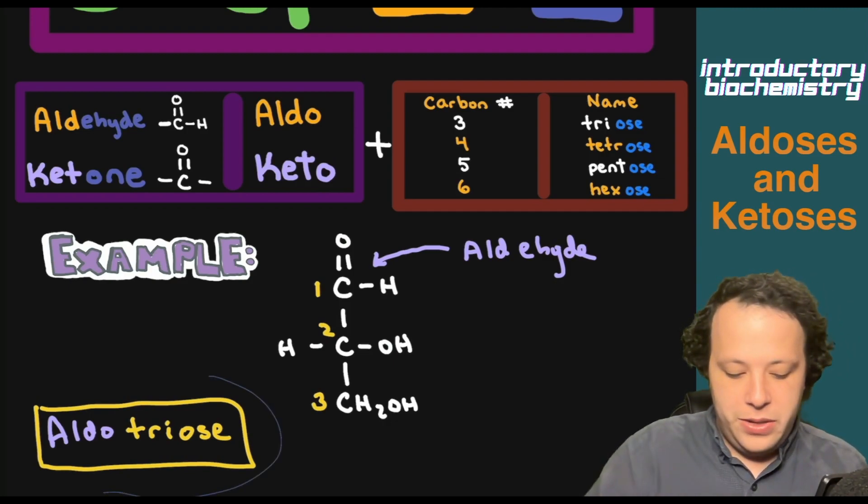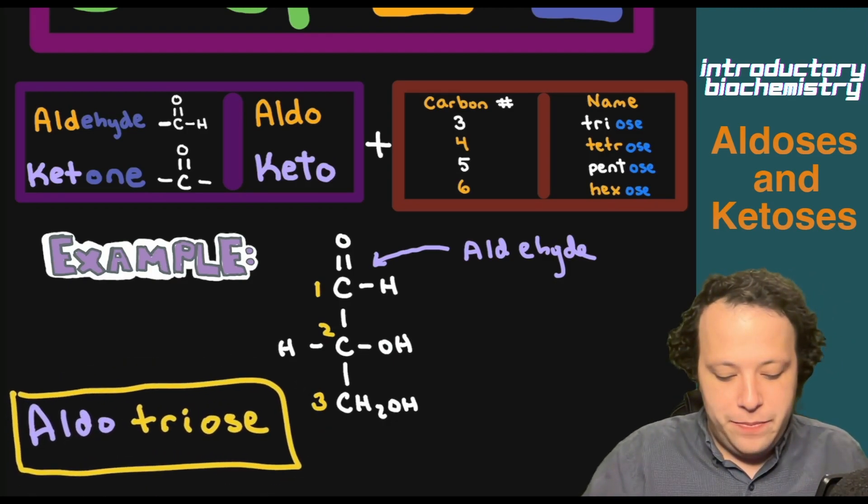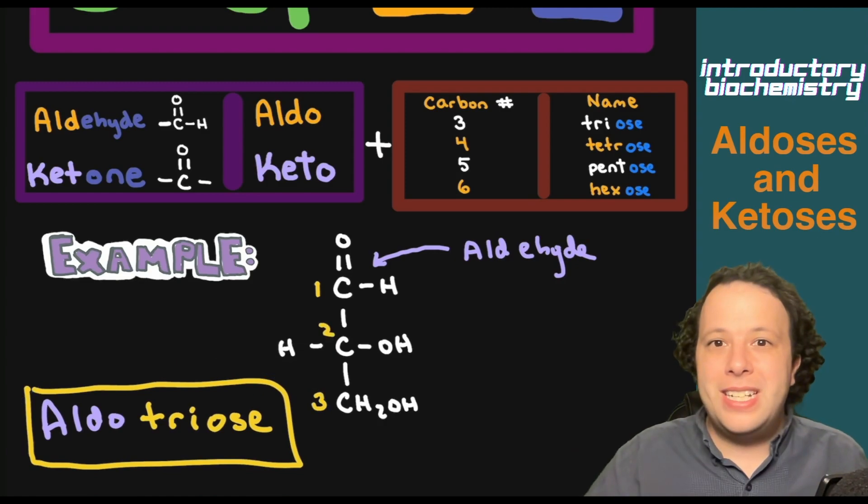So now that we have three carbons, this is going to be an aldotriose as our classification for this structure. So that is all you have to do when you're classifying them. Let's go through a couple of different examples and practice these different skills.